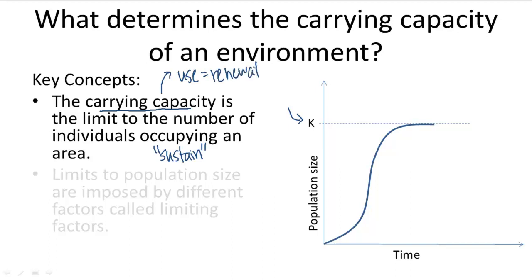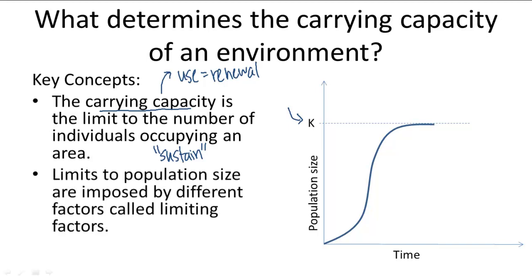Carrying capacities aren't fixed because they are tied to resource availability, so any factors that change resource supply will cause a shift in the carrying capacity. Variables that limit resources and thus limit population growth are called limiting factors, and these are discussed in more detail in the next video.